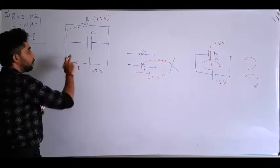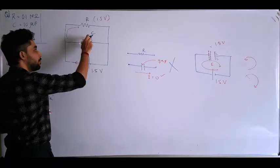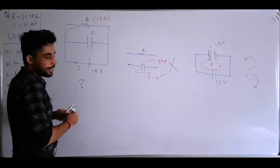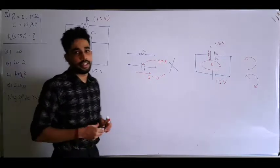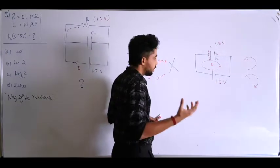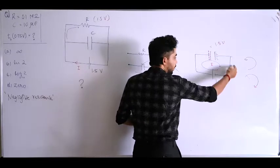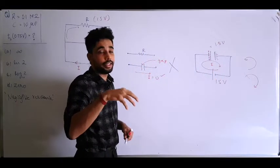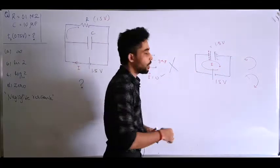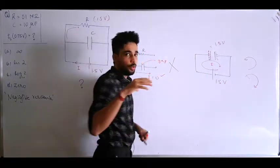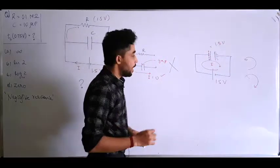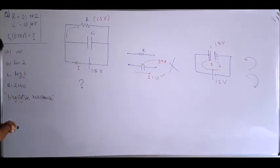Now that the doubt is clear — the current flows through the circuit, the capacitor charges, and it should charge to 1.5 volt — the next question is: does the capacitor take time to get charged, or does this happen instantaneously? In realistic circuits, there are resistances in the wires and internal resistance of the cell, so not the entire value of current flows immediately, meaning it takes a little time to fully charge up.